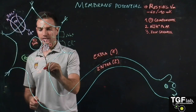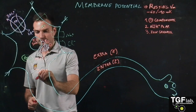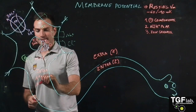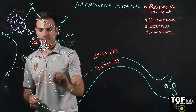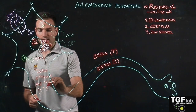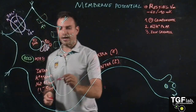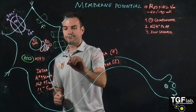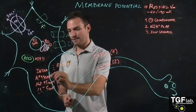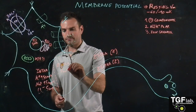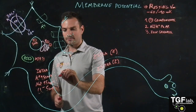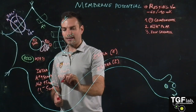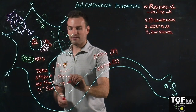In the intracellular space we have: potassium at 150 millimolar, sodium at 15 millimolar, and chlorine at 5 millimolar. In the extracellular space, potassium is 5 millimolar, sodium is 145 millimolar, and chlorine is 125 millimolar.